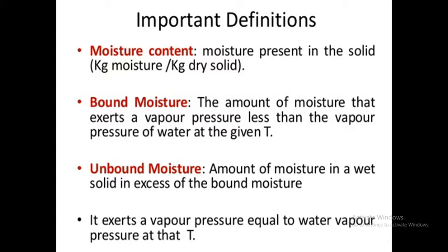Kg of moisture per kg of dry solid. Bound moisture, amount of moisture that exerts a vapour pressure less than the vapour pressure of water at the given temperature.